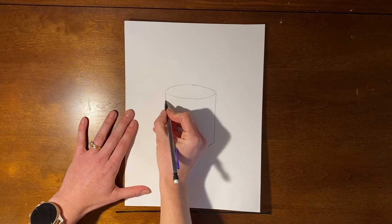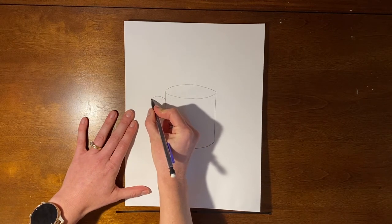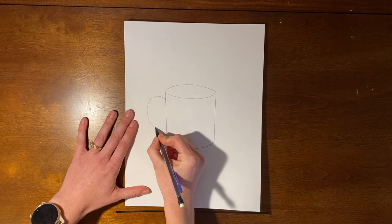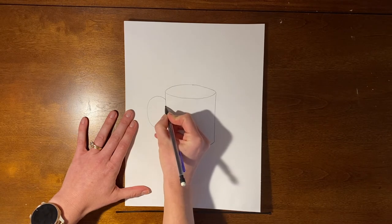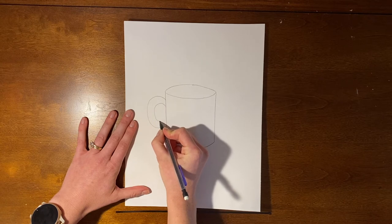Then let's draw a letter C attached to the side of the mug. Make it nice and big, because you're going to draw a small letter C inside of it.